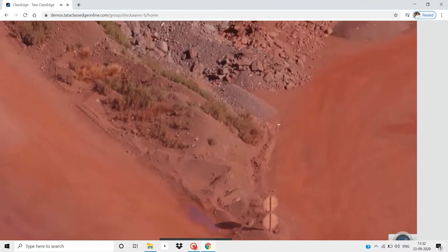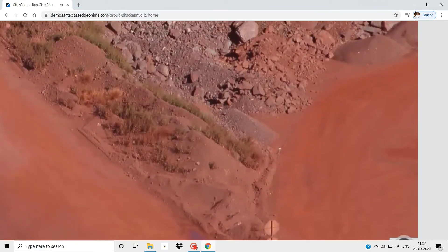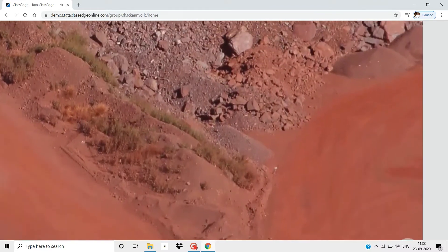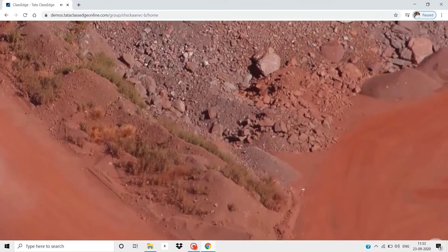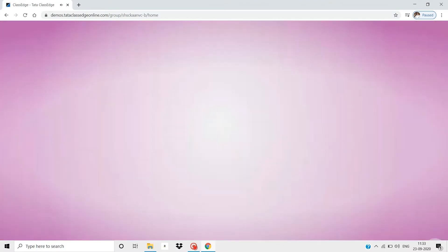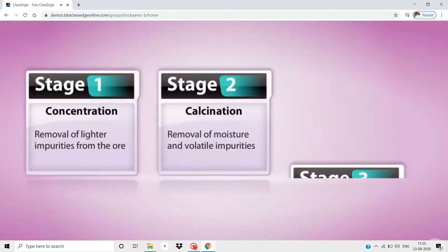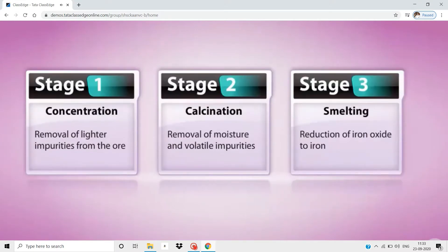Iron needs to be extracted from its ore before it can be used commercially. Let us see how iron is extracted from its ore. The extraction of iron from its ore is a three-stage process. It includes concentration, calcination, and smelting.